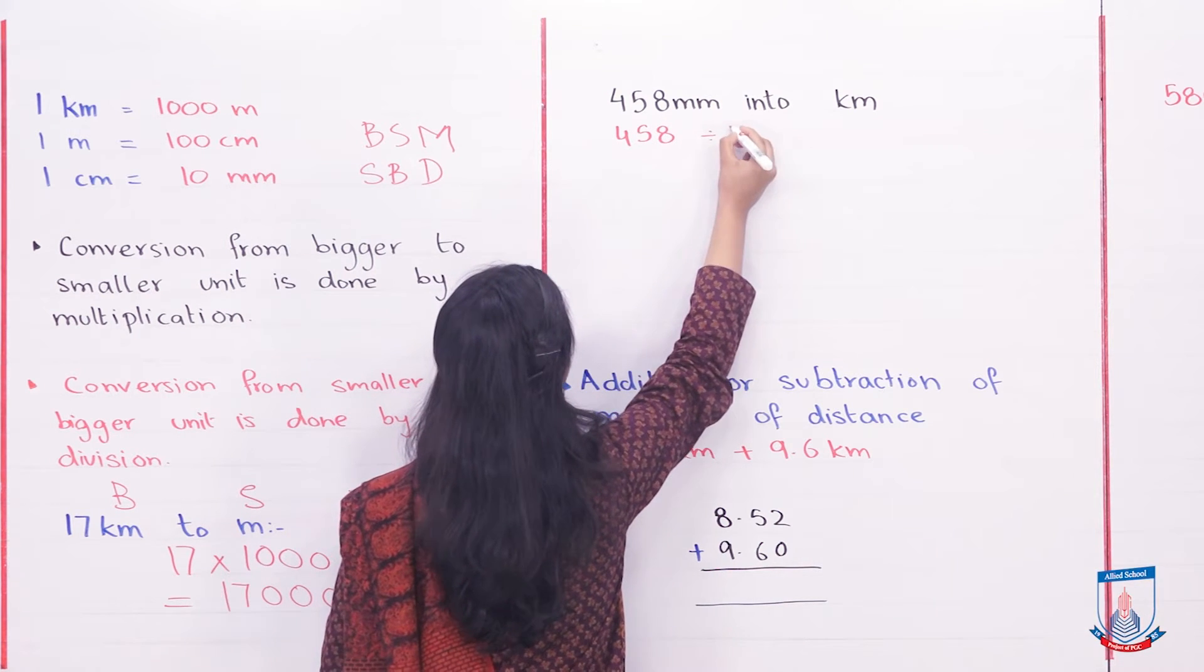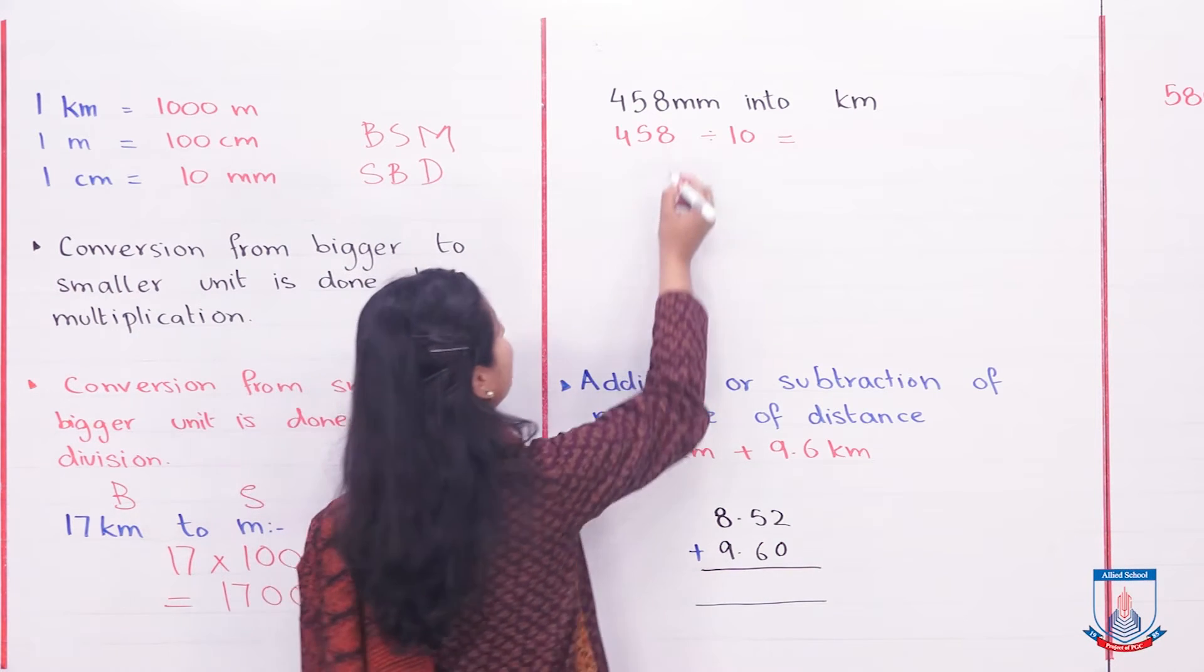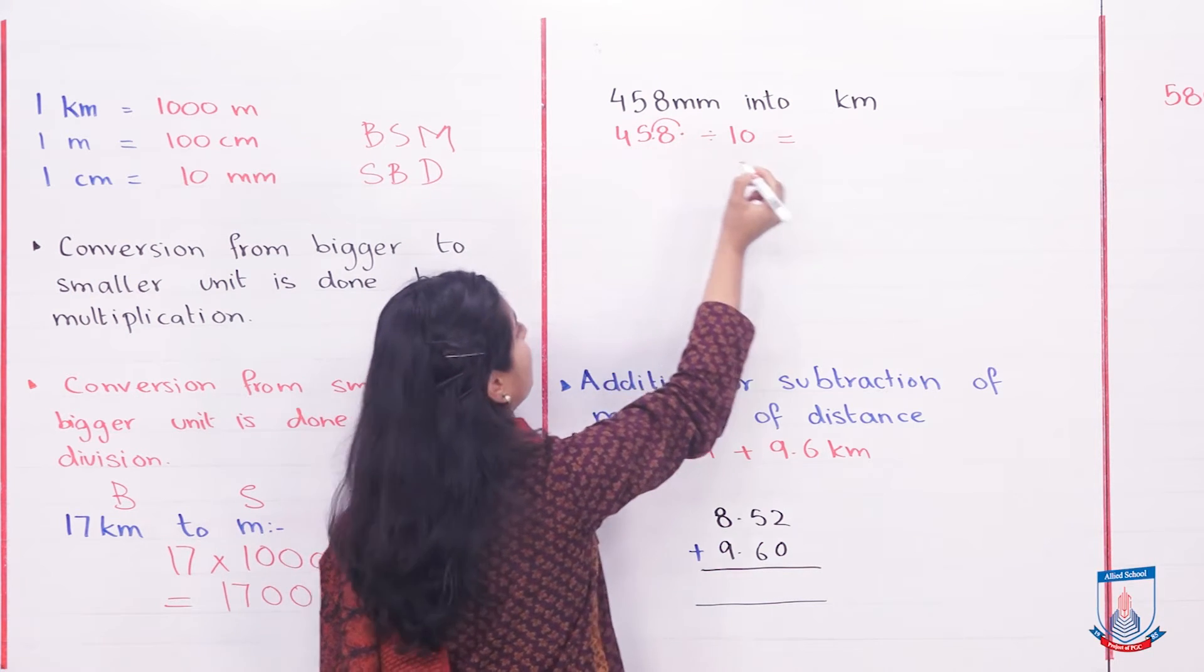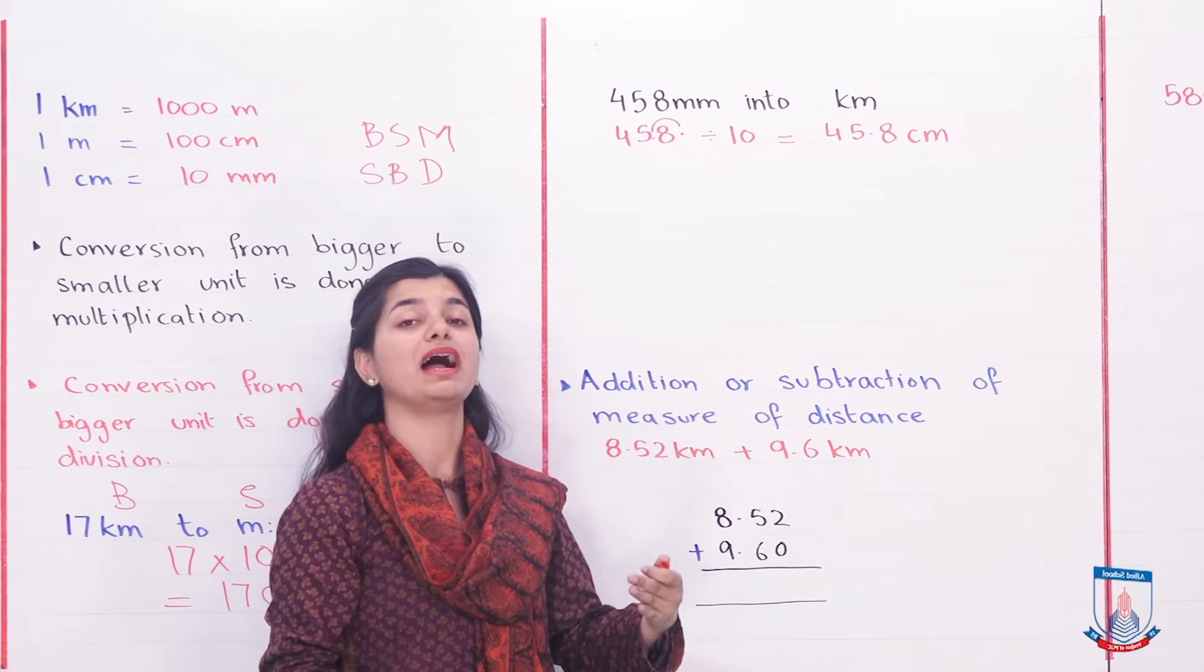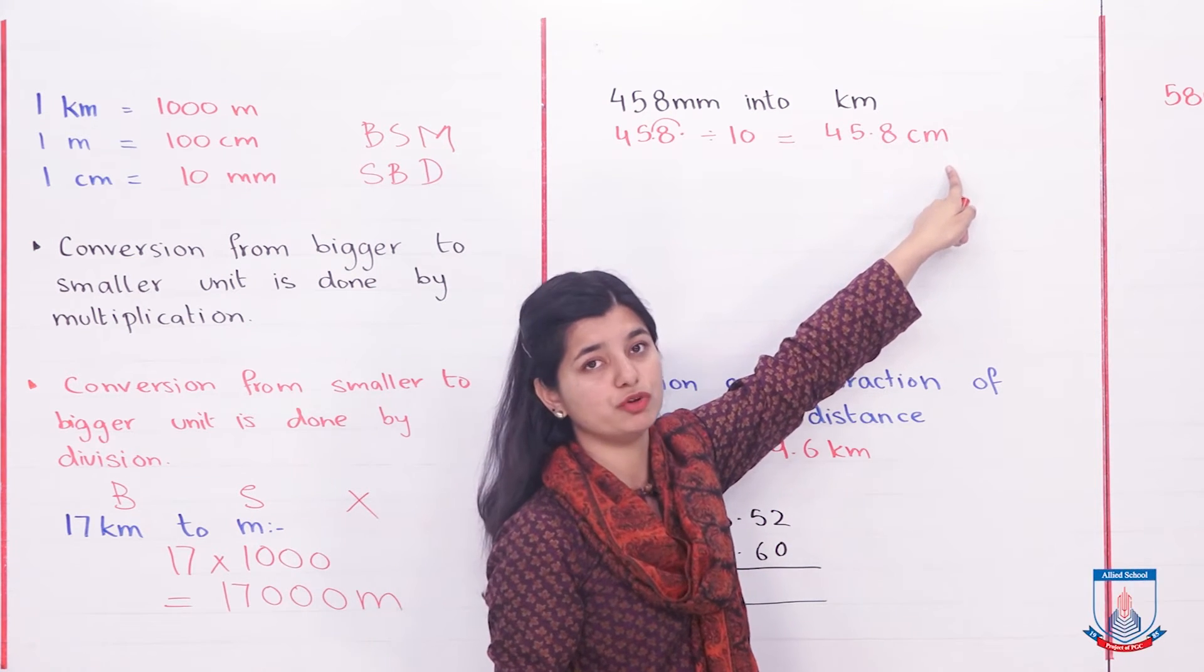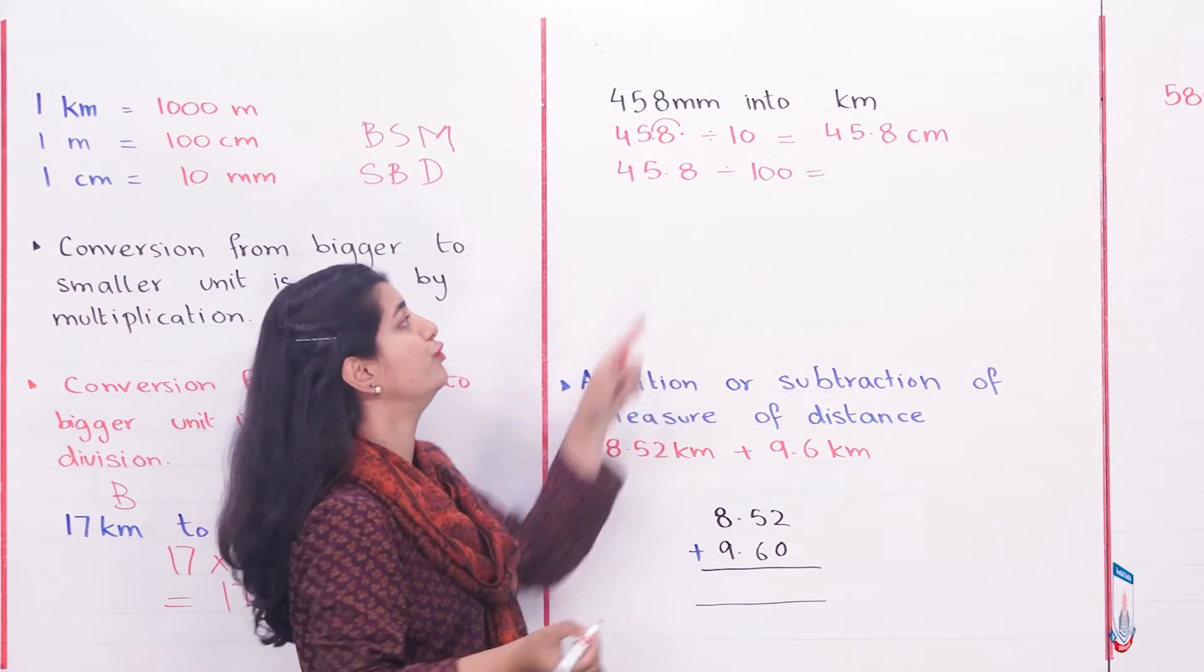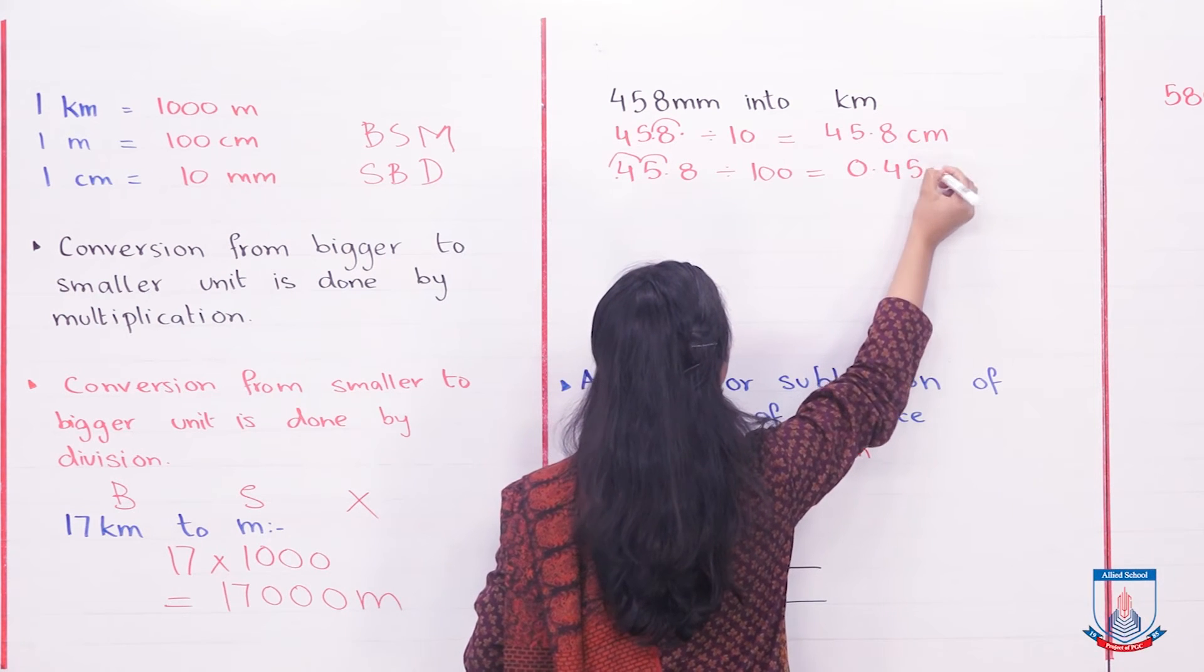458 divided by 10. Now, chapter number 4 is about decimals. We have to apply that information. When dividing by 10, we move the decimal point one place to the left. And our answer is 0.458 meters.